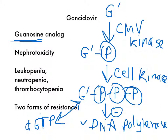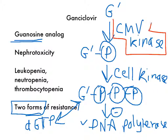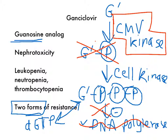In terms of resistance, there are two forms. The first is a lack of CMV kinase — if the virus mutates such that there's no CMV kinase, you can't get that first phosphorylation step, causing resistance. The second is a mutation in the viral DNA polymerase such that ganciclovir triphosphate can't bind. In terms of toxicity, ganciclovir causes nephrotoxicity, and it's also quite toxic to host cell enzymes — even more so than acyclovir — causing leukopenia, neutropenia, and thrombocytopenia.